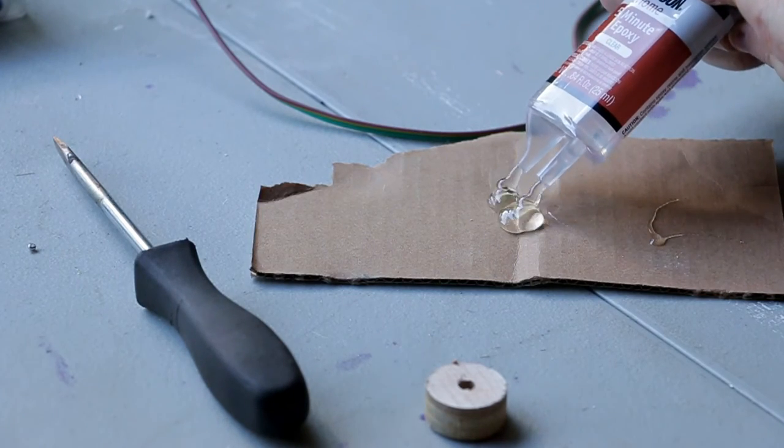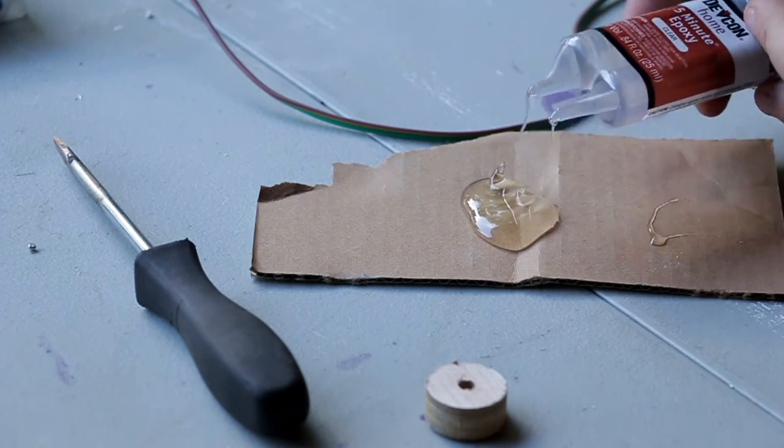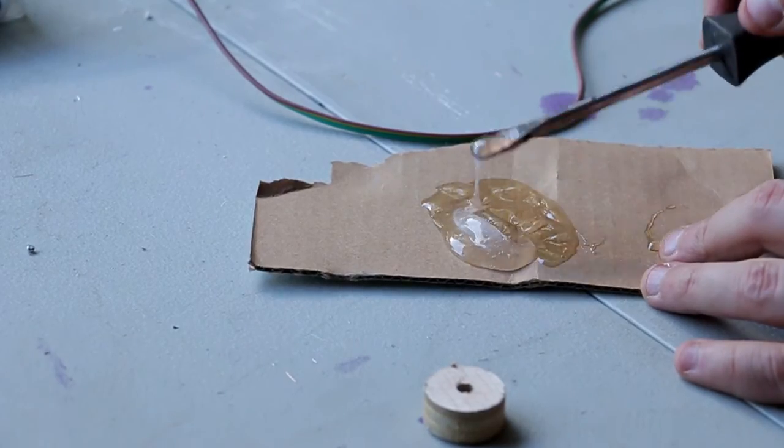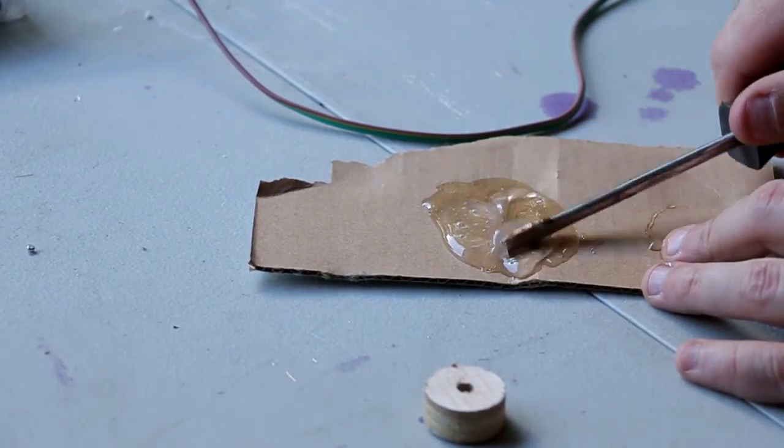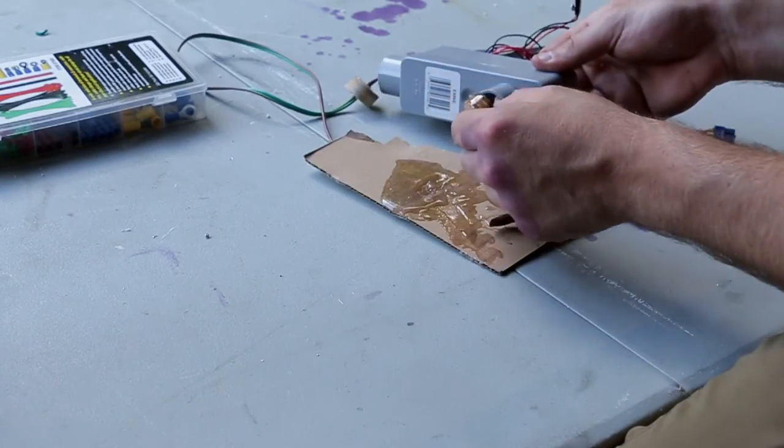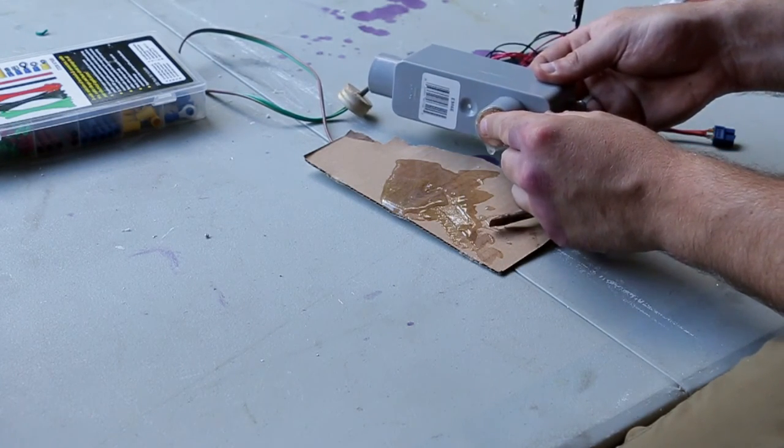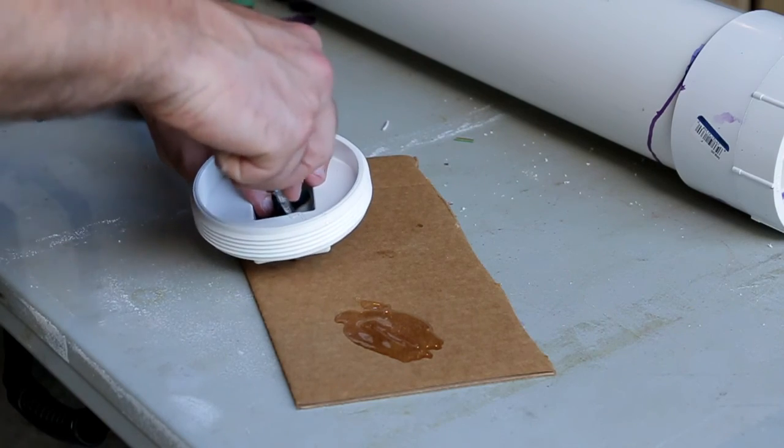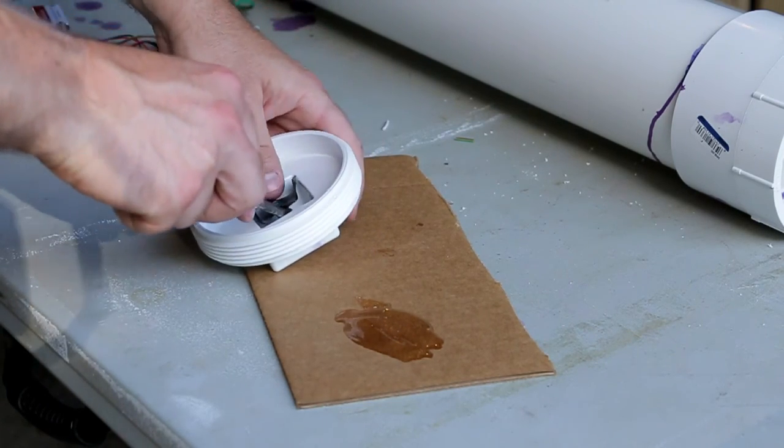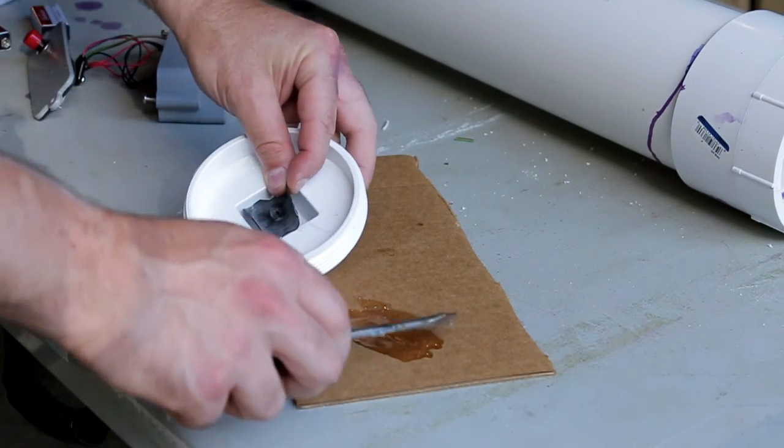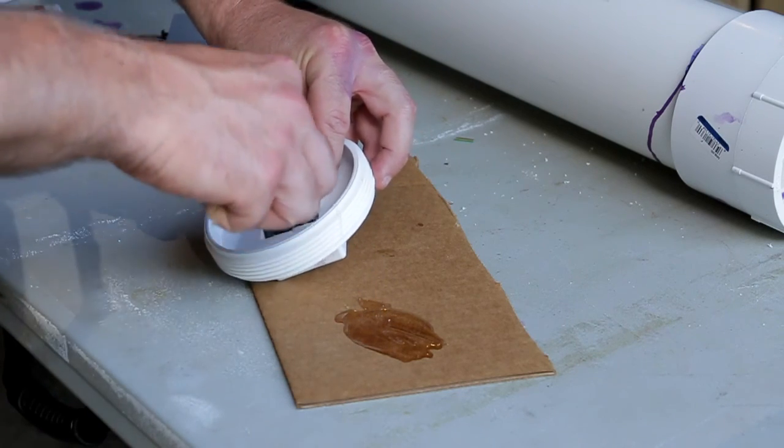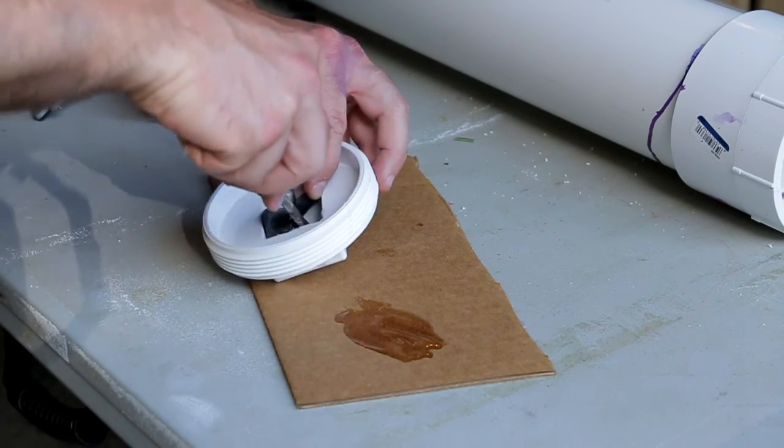Now you can mix your epoxy to seal up your holes and your tire valve. Make sure you mix it up really well so it gets a good bond. Apply lots of epoxy to your Schrader valve and end cap, that way there's no leaks. You want to make sure you go extra heavy, just be careful not to get any inside the hole that forces air in.